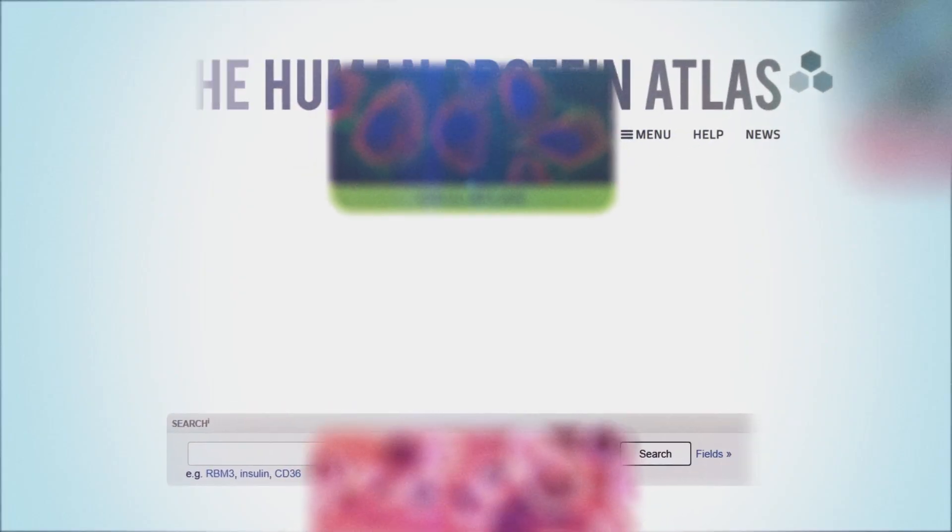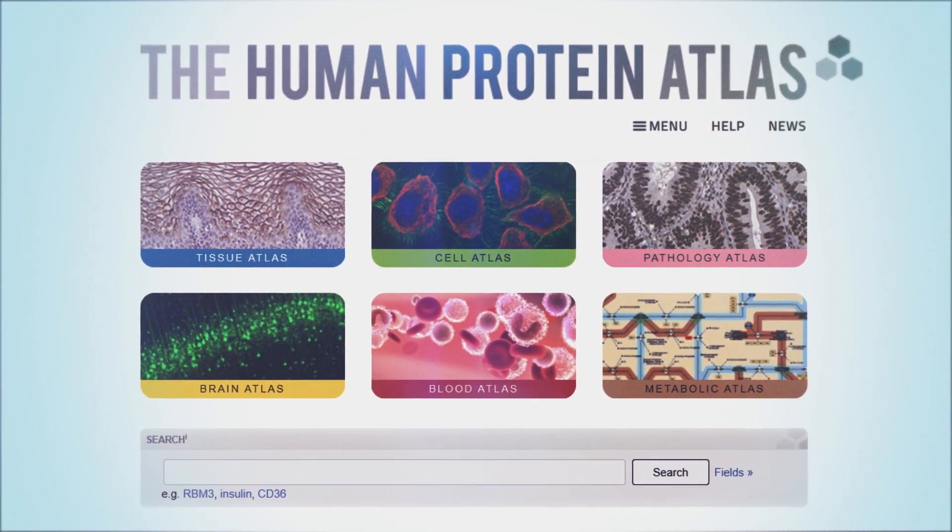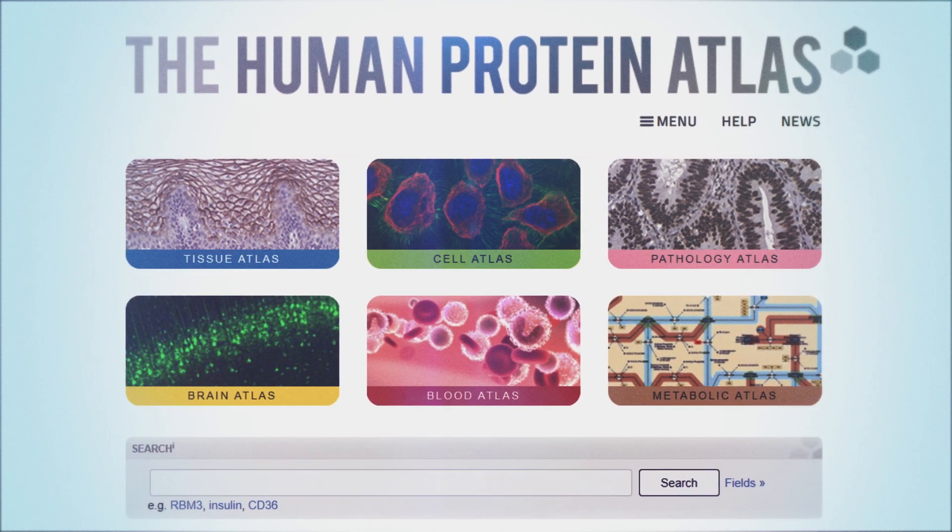The human protein atlas was created by scientists in Sweden together with scientists all over the world. The aim is to create a periodic table of the building blocks of human beings, the proteins. The human protein atlas consists of six different categories, each exploring different aspects of human proteins.